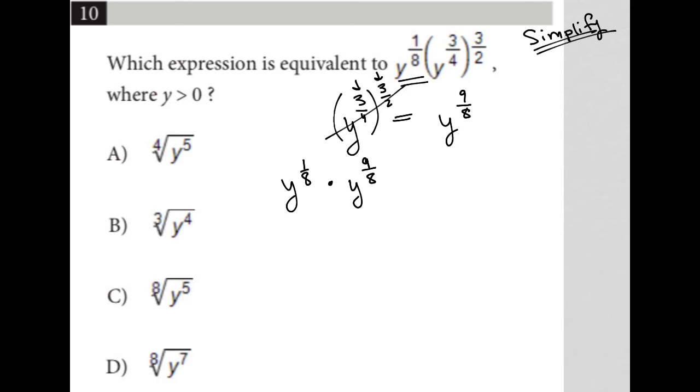Now, whenever you have the same base, in this case y, and you're multiplying with exponents, 1 eighth and 9 eighths, you add the exponents together. So this is going to become y to the 10 eighths. 1 eighth plus 9 eighths is 10 eighths.